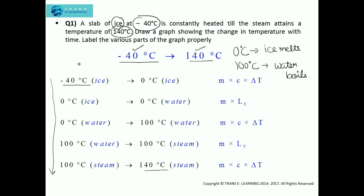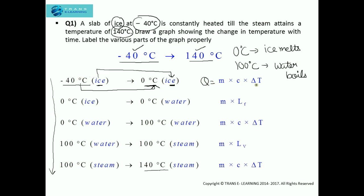As given in the question, the ice is constantly heated, so the ice on absorbing heat will change into ice at 0 degree Celsius. From the heating curves, whenever there is a change in temperature — in this case a rise in temperature — there is no change in state. At 0 degree Celsius we still have ice; the state has not changed. The heat absorbed in this case is MC delta T, where M is the mass of the ice, C is the specific heat capacity of ice, and delta T is T2 minus T1, which is 0 degree Celsius minus minus 40 degree Celsius.